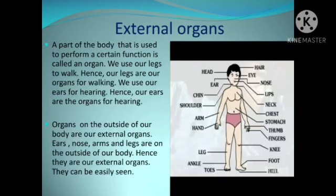External organs. A part of the body that is used to perform a certain function is called an organ. We use our legs to walk; hence our legs are our organs for walking. We use our ears for hearing; hence our ears are the organs for hearing.